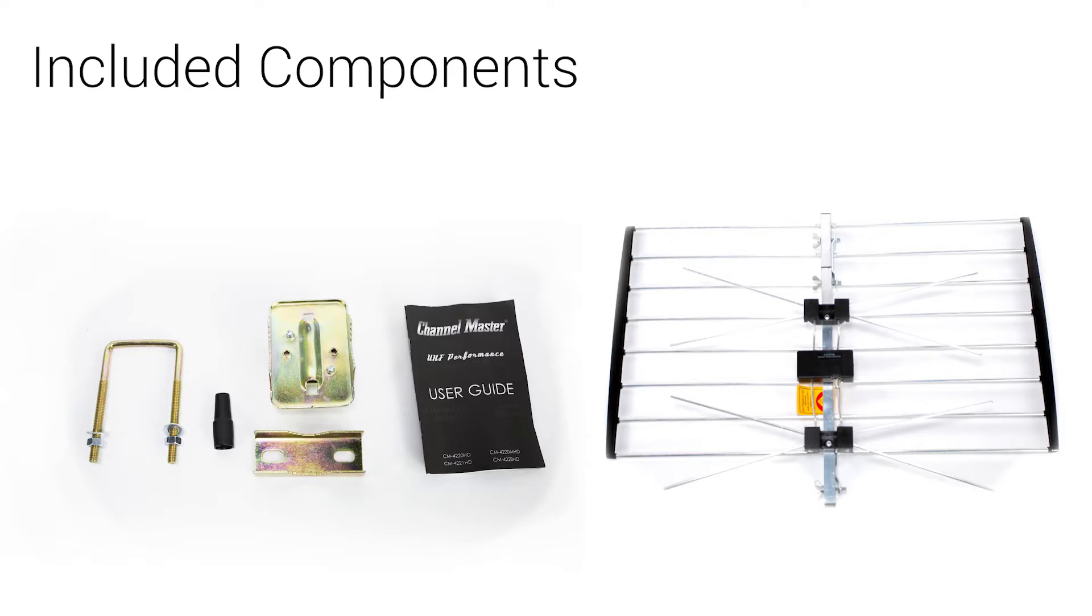Your METROtenna includes the antenna and instruction manual and mounting hardware consisting of a U-bolt, nest, and bracket assembly along with two screws, two nuts, and two washers.